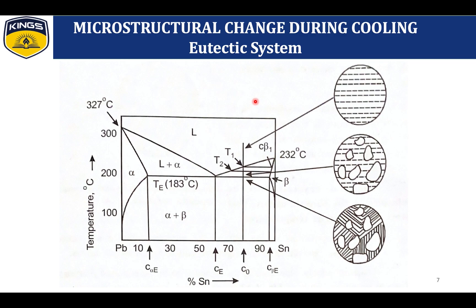Another example showing structure-wise changes is given for a eutectic system, illustrating the changes between the liquid and solid phases. Here we can see purely liquid, then some solid phases occurring, and then solid phases mixed with liquid phases. Using the tie-line and lever rule, we can note Ce, C-naught, and C-beta-e, which represent the limit regions of the beta and alpha phases.